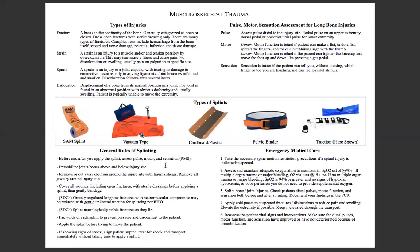Now let's talk about some general rules of splinting. Before and after you apply the splint, assess PMS — before and after, because sometimes you manipulate the injury a little bit and it affects PMS. Immobilize the joint and bones above and below the injury site. So if you have a forearm fracture, you immobilize the wrist and the elbow — that's the joint below and above the long bone. If you have an injured joint, say an elbow dislocation, you immobilize the ulna and radius below and the humerus above. You're immobilizing the joint above and below for a long bone injury, or the long bone above and below for a joint injury.